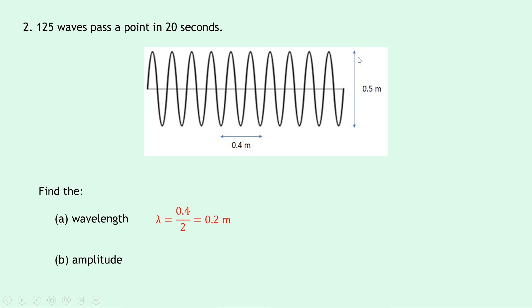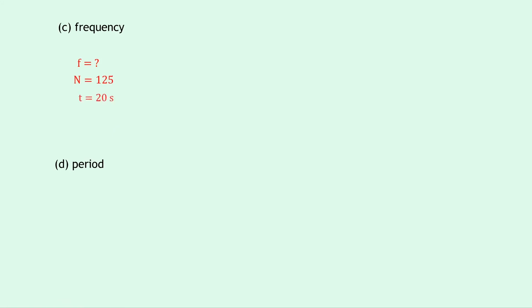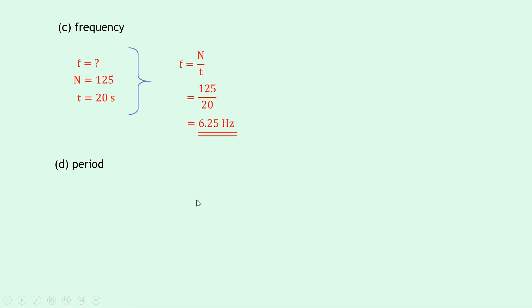To find the amplitude, we have a full height of 0.5 metres, but the amplitude is half the vertical height. So we divide 0.5 by 2, giving an amplitude of 0.25 metres. Part C, the frequency of the wave — writing down what we know, F equals question mark, N equals 125 and time is 20 seconds. Writing down our relationship F equals N over T and substituting in the numbers, we get 125 divided by 20, which equals 6.25 hertz.